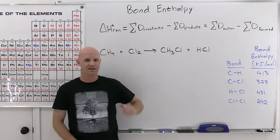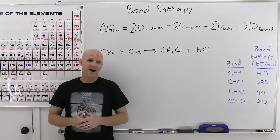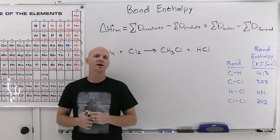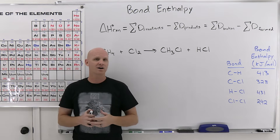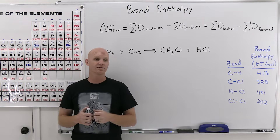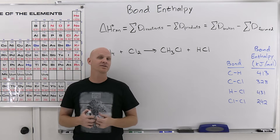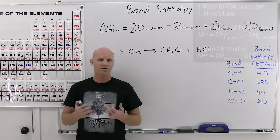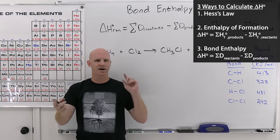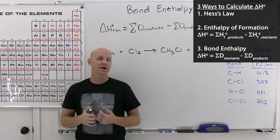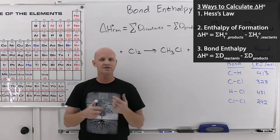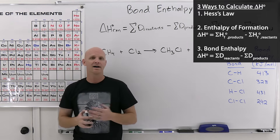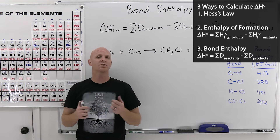Bond enthalpy is another way to calculate delta H of a reaction. Students often forget they've learned three different tools, and when asked to calculate delta H, don't realize what formula to use. With Hess's law, you add up a bunch of reactions — sometimes reversing them, which makes the delta H negative, sometimes doubling them — and however you manipulate the reactions, they have to add up to exactly the reaction you're looking for, then you add up the corresponding delta Hs.